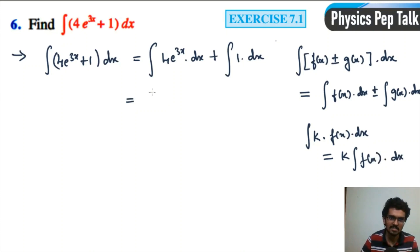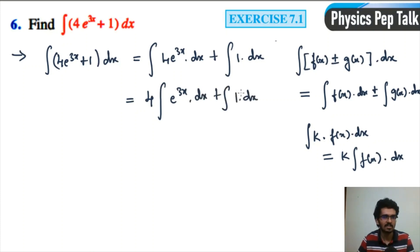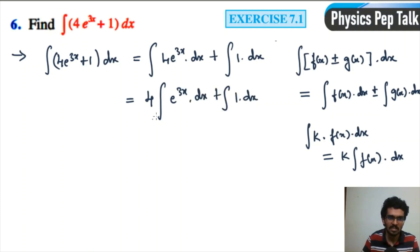So I can write this as 4, with the constant on the outside, times the integral of e to the power of 3x with respect to x, plus the integral of 1 dx.